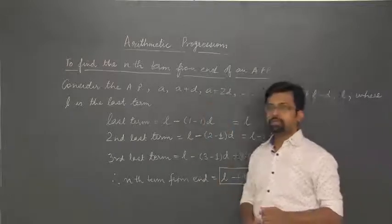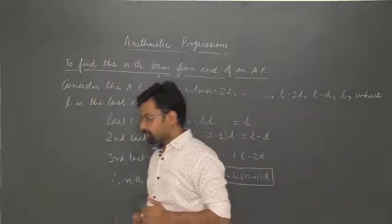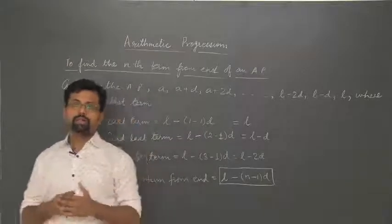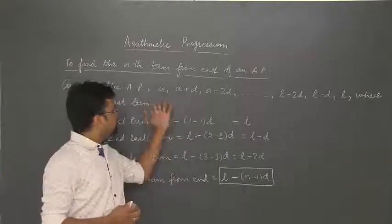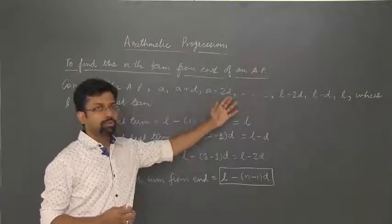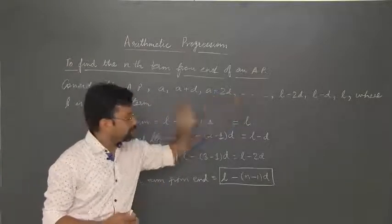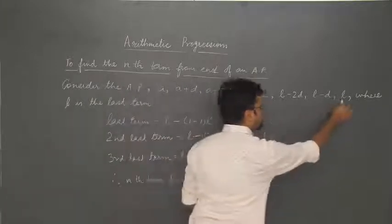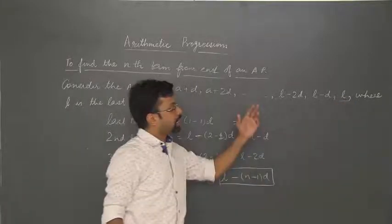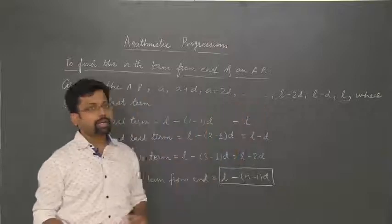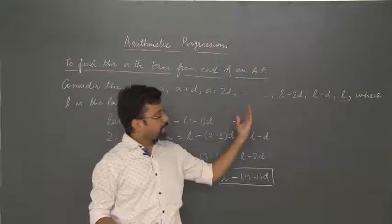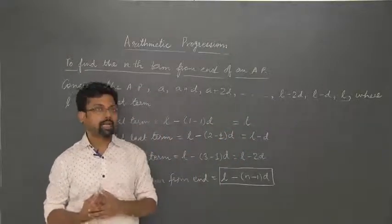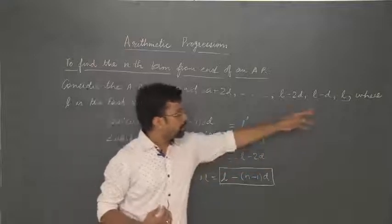Consider an AP with the first term as A, the second term as A plus D, where D is the common difference, and we proceed by writing the number of terms. Here we have the last term as L. If the last term is L, the second last term will be D less than the last term, so it will be L minus D.